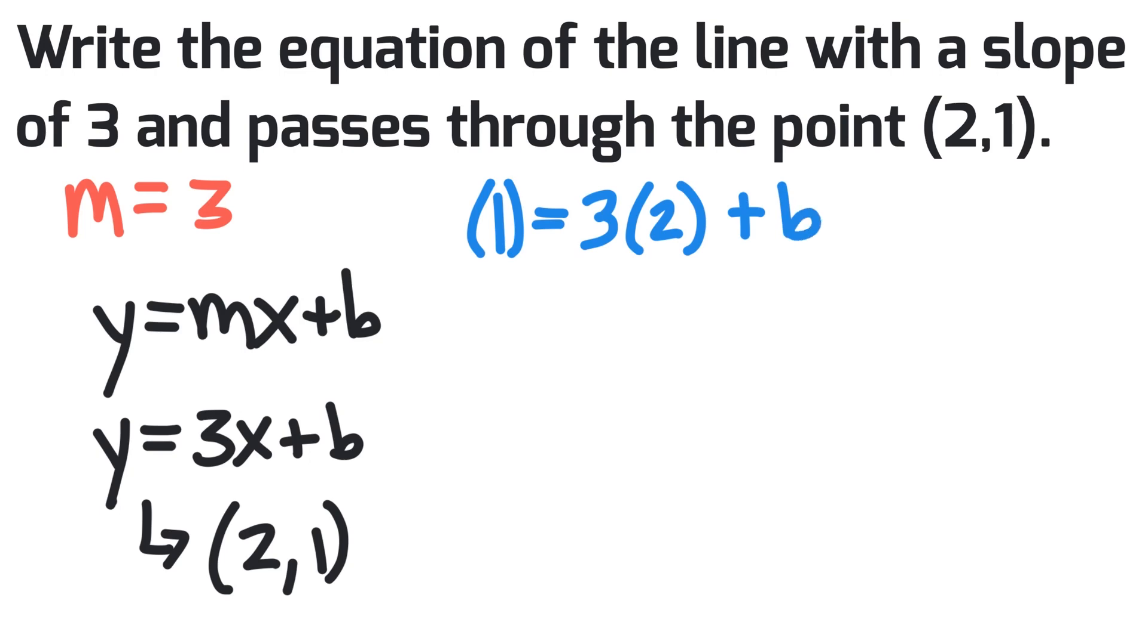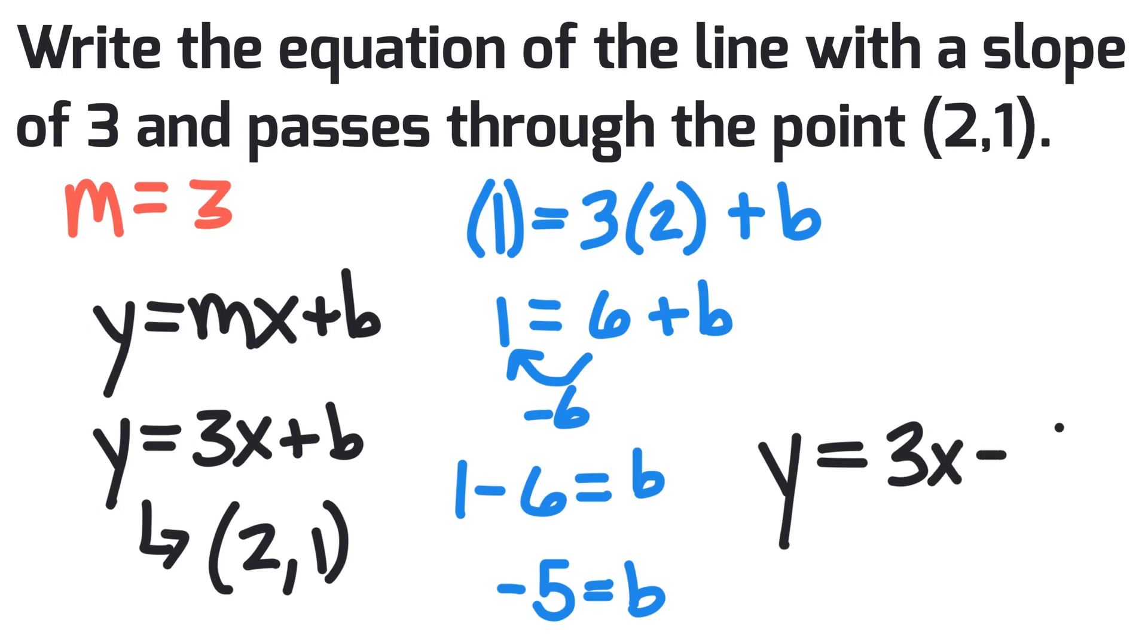1 equals 3 times 2 is 6 plus b on the right-hand side. And to move the 6 from the right-hand side to the left-hand side we do the reverse operation which is subtract 6. 1 minus 6 equals b and b has to be negative 5. I'm going to take that value to get my final equation: y equals 3x minus 5.